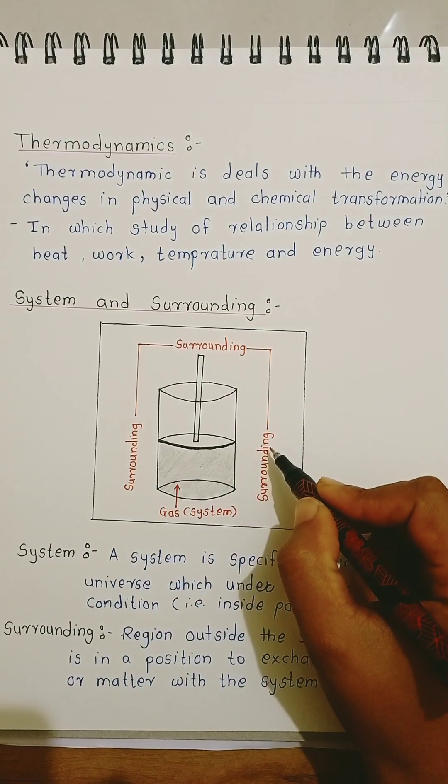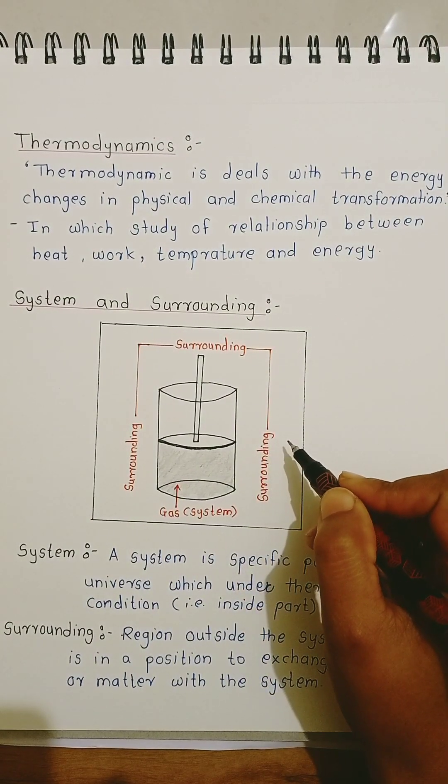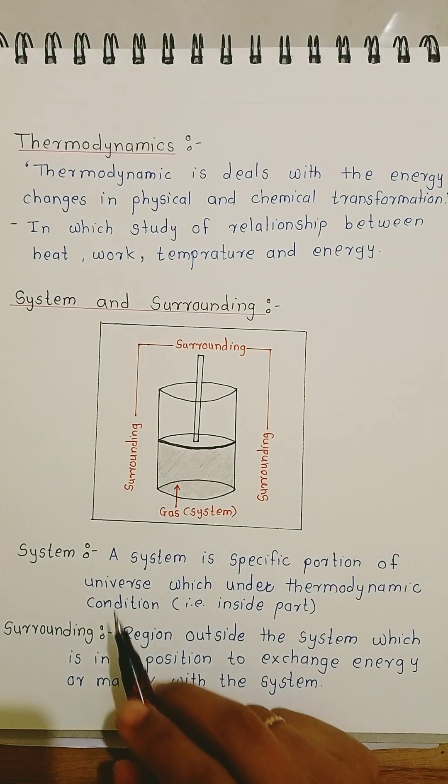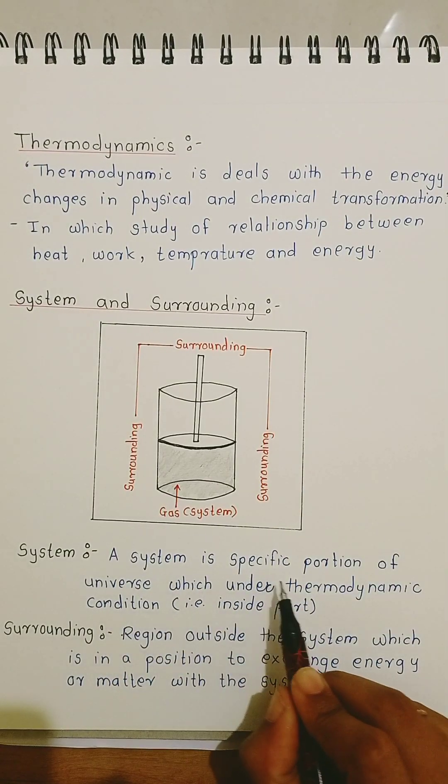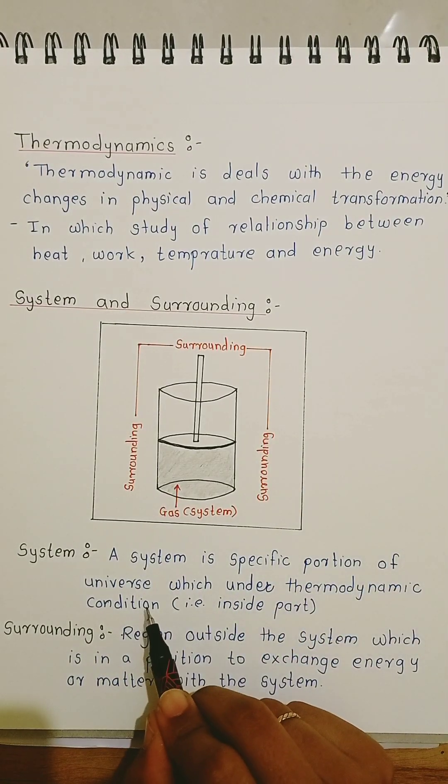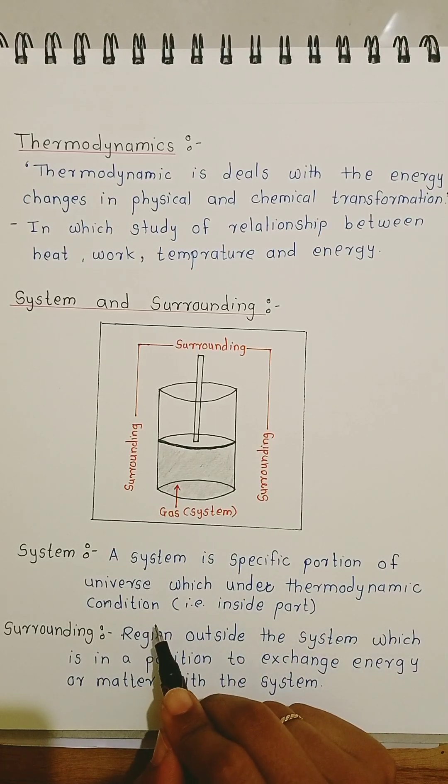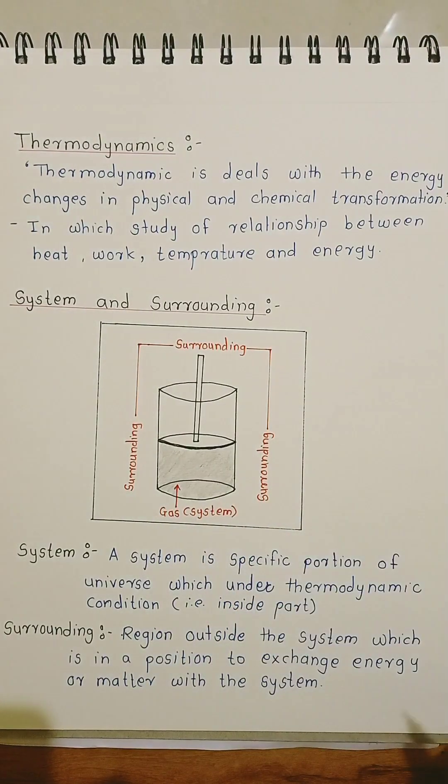The outside part of the cylinder is called the surrounding. So, the definition is: a system is a specific portion of the universe which, under thermodynamic conditions, is the inside part.